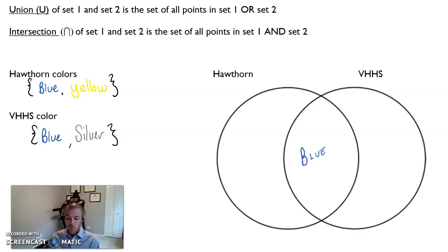And then the yellow is only a Hawthorne color whereas silver is only a Vernon Hills color. So we would represent them in our Venn diagram like this. And then listing all three colors but listing blue only once would be the representation of the union. So the union we only have to represent something once even if it appears more than one time.